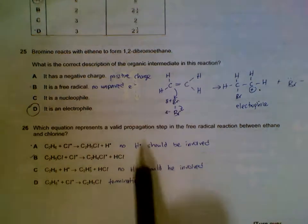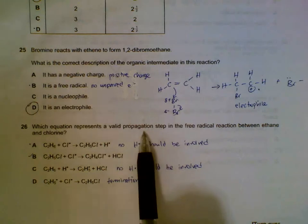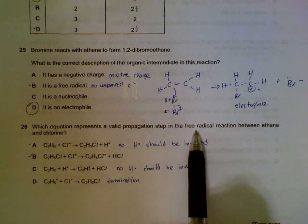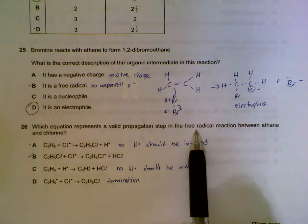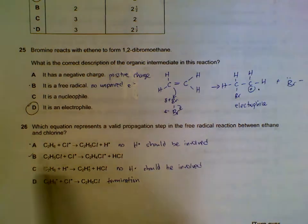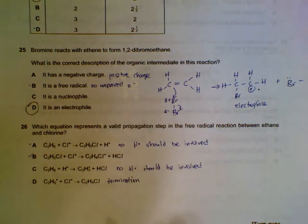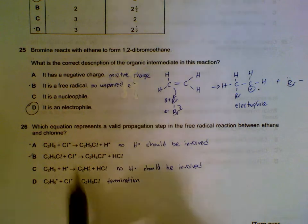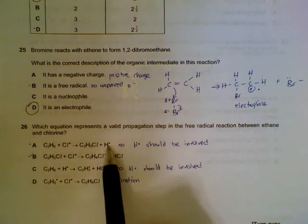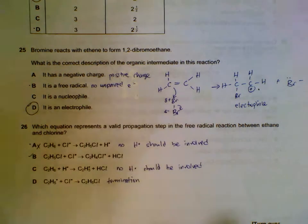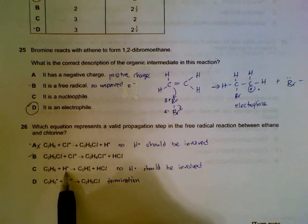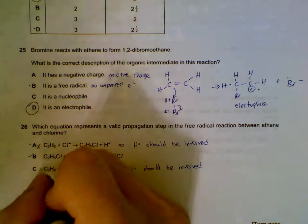Number 26: which one is the propagation step? Propagation step involves a free radical and a non-free radical to react, and then it creates another free radical and a non-free radical. Importantly, there should be no hydrogen radicals involved during the reactions. We can eliminate option A straight away - you see a hydrogen radical, that should not be considered. Option C has involvement of hydrogen free radical, that will be out also.